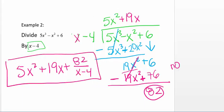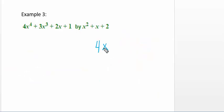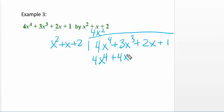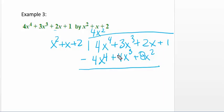We're going to do one more example. We're dividing 4x to the 4th plus 3x cubed plus 2x plus 1 divided by x squared plus x plus 2. So x squared times what gives you 4x to the 4th? That's 4x squared. I multiply 4x squared times x squared — that gives 4x to the 4th. Then 4x squared times x gives positive 4x cubed, and 4x squared times 2 gives positive 8x squared. Since this is subtraction, that changes the sign of all of them, so the 4x to the 4th terms cancel.